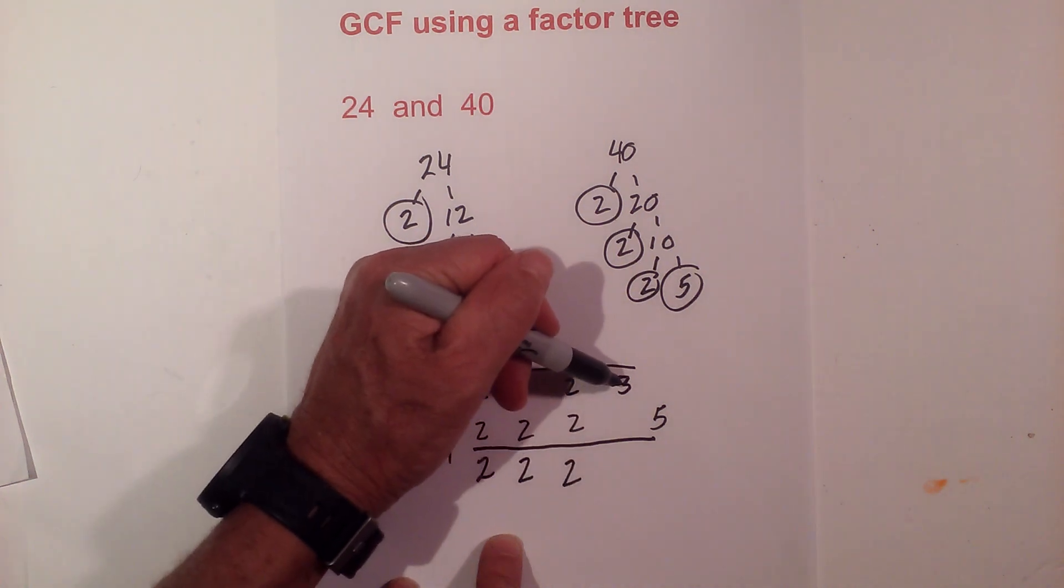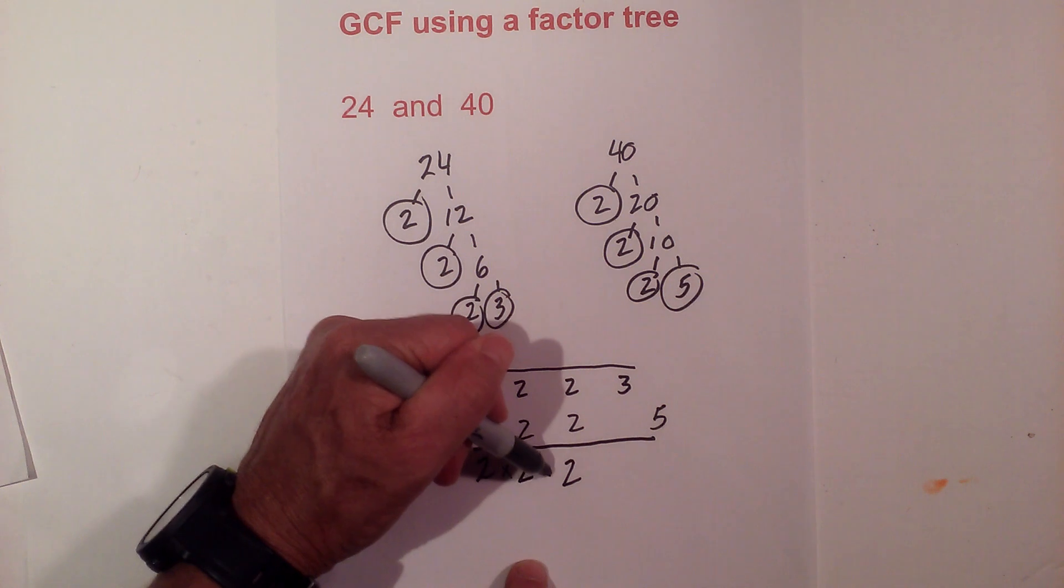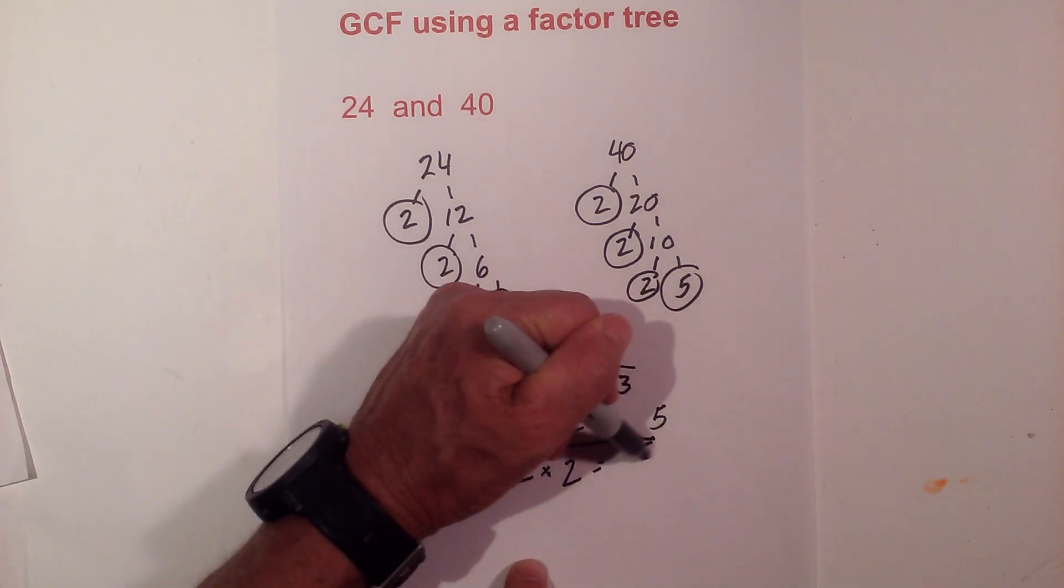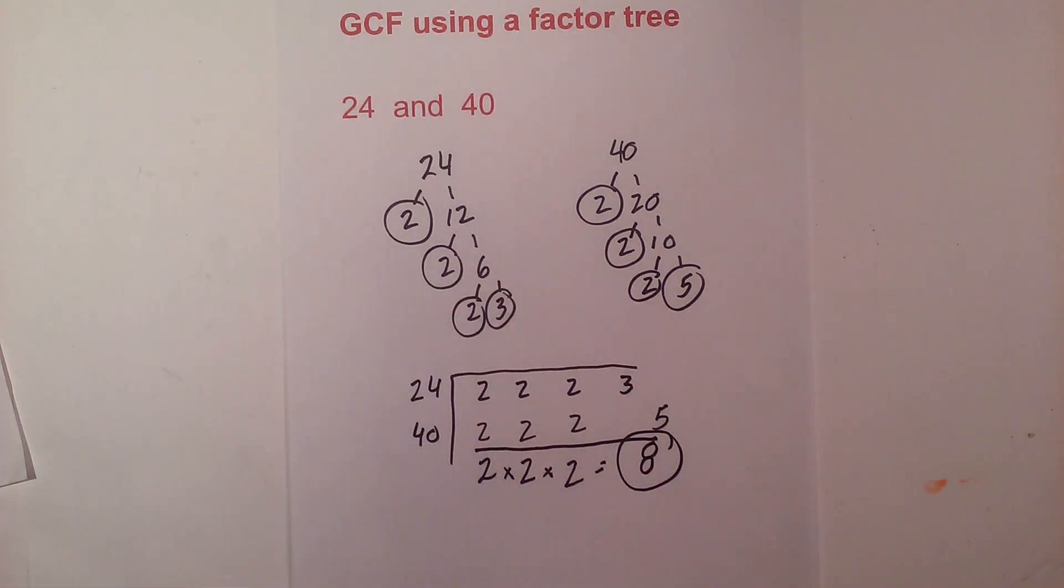Now I just multiply the 2s together: 2 times 2 is 4, 4 times 2 equals 8. So the greatest common factor of 24 and 40 is 8.